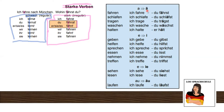So a becomes ä — this is called an umlaut. The first group we already checked: fahren, to drive. Next: schlafen, to sleep — ich schlafe, du schläfst. Tragen, to hold or to wear — ich trage, du trägst. Waschen, to wash — ich wasche, du wäschst. Halten, to hold — ich halte, er hält, or for 'you': du hältst, with -st at the end. This is the first little group.